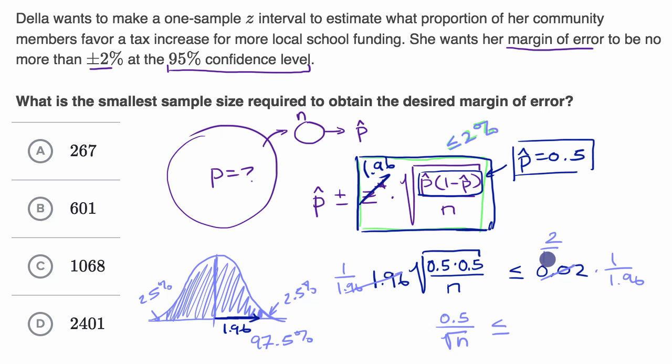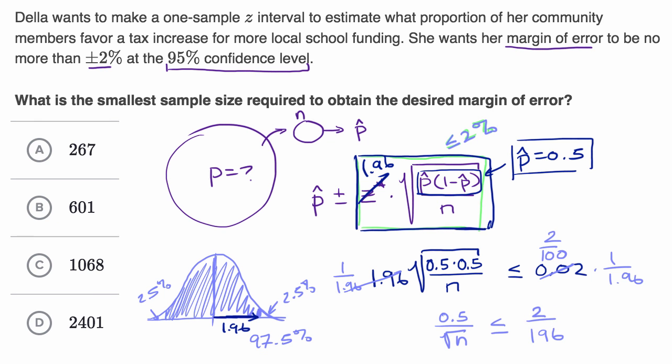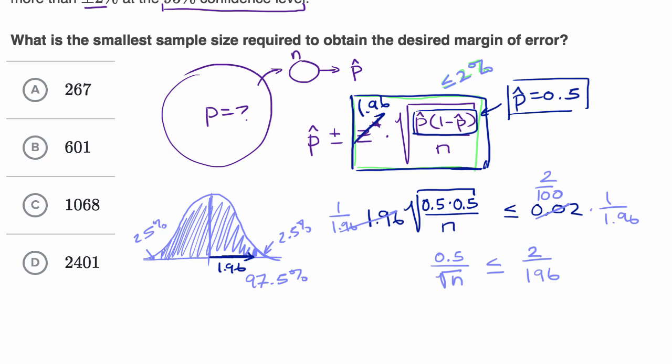This is the same thing as 2 over 100, so 2 over 100 times 1 over 1.96 needs to be less than or equal to 2 over 196. This is fancier algebra than we typically do in statistics, or at least in introductory statistics class.